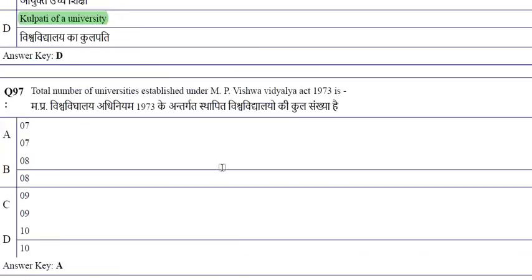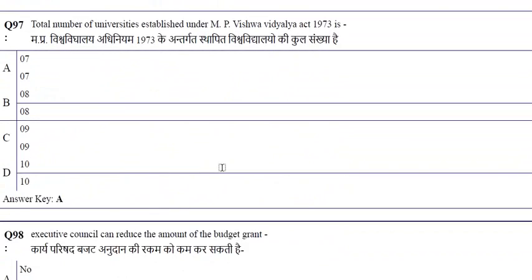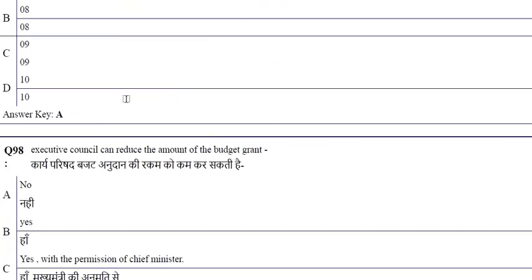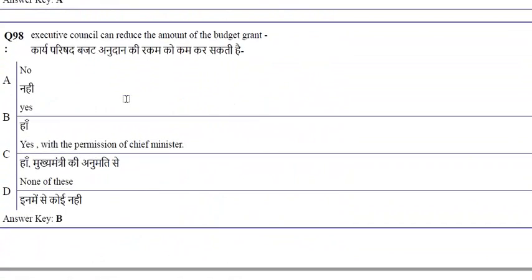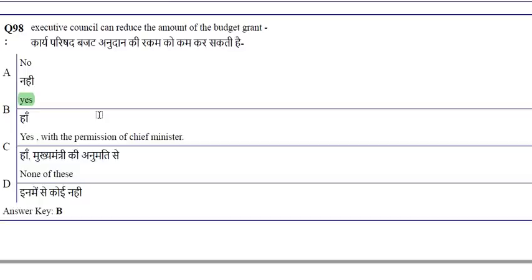The total number of universities established under the MP Vishwavidyalaya Adhiniyam 1973 is seven. The Executive Council can reduce the amount of the budget grant.